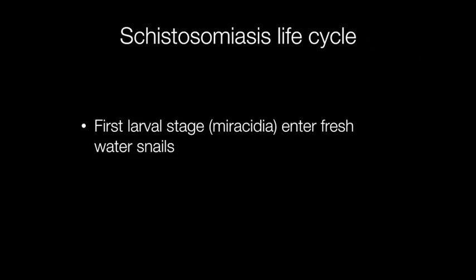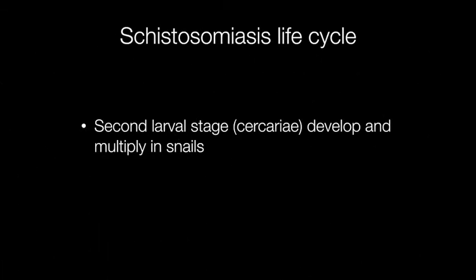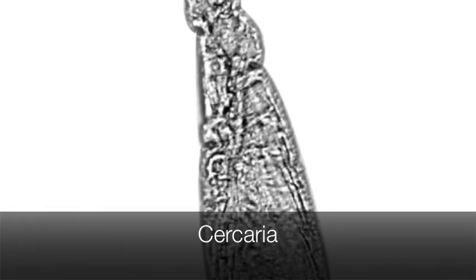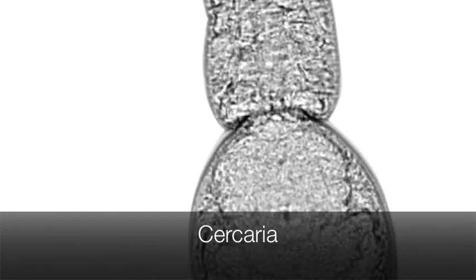The miracidia then enter the freshwater snails. In the snails, the larvae develop into the second larval stage or cercariae. The cercariae are then transmitted from the snails into the water. Here is an example of the second larval stage or cercariae.